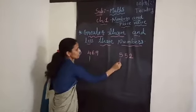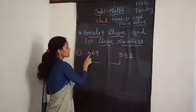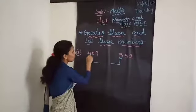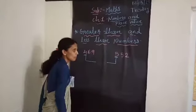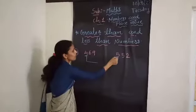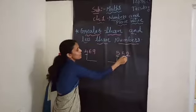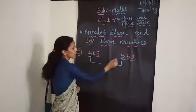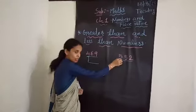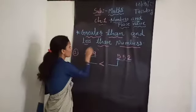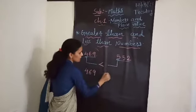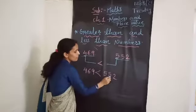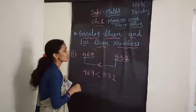First we select the Hundreds place number. Look here — it's 4 and here it's 5. Out of 4 and 5, which number is bigger? Yes, 5 is bigger and 4 is smaller. So for the bigger number: 469 vs 552 — 552 is bigger and 469 is smaller. Since 4 is smaller and 5 is bigger, for the smaller number we put the less than sign. So we can say that 469 is less than 552.